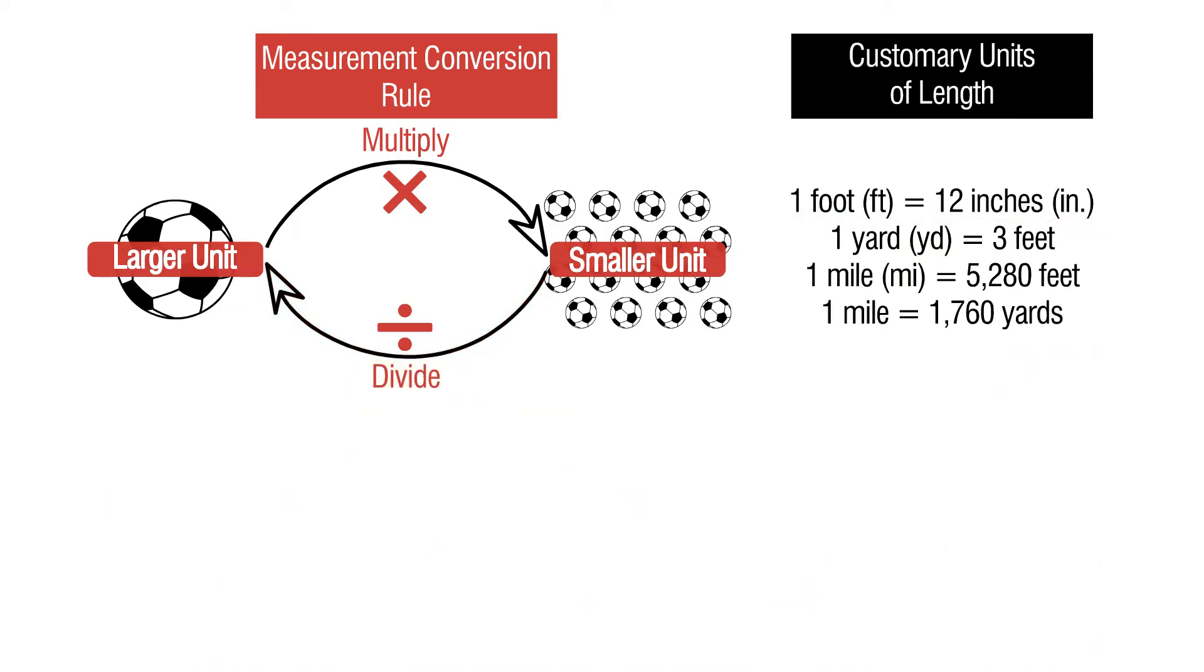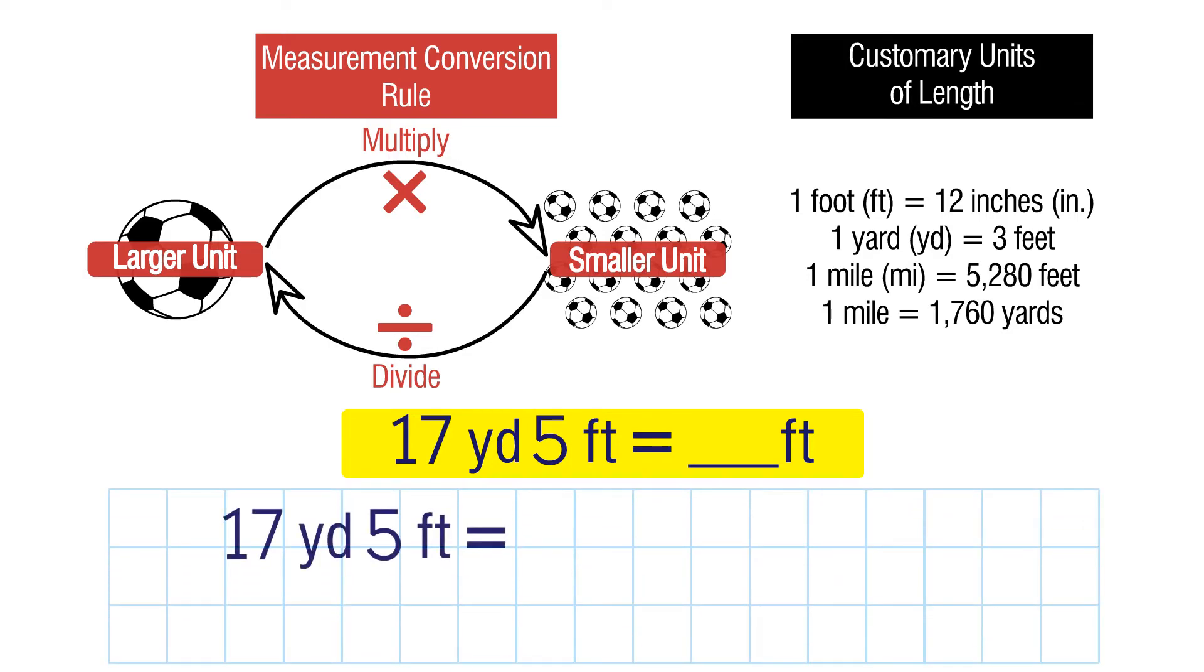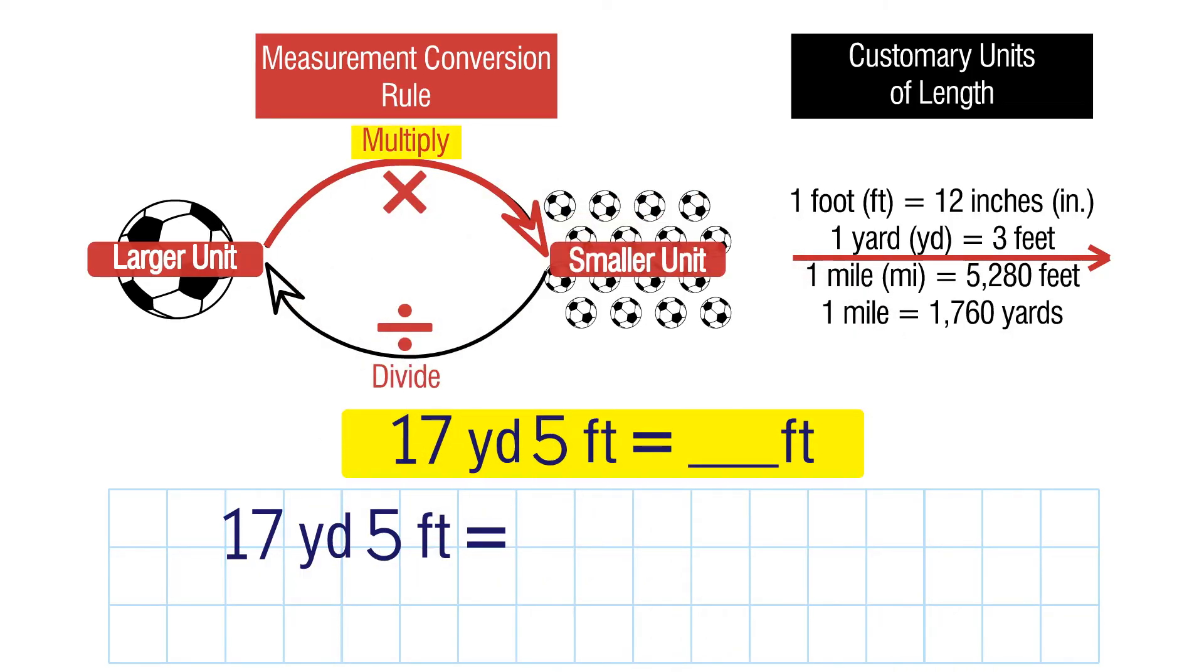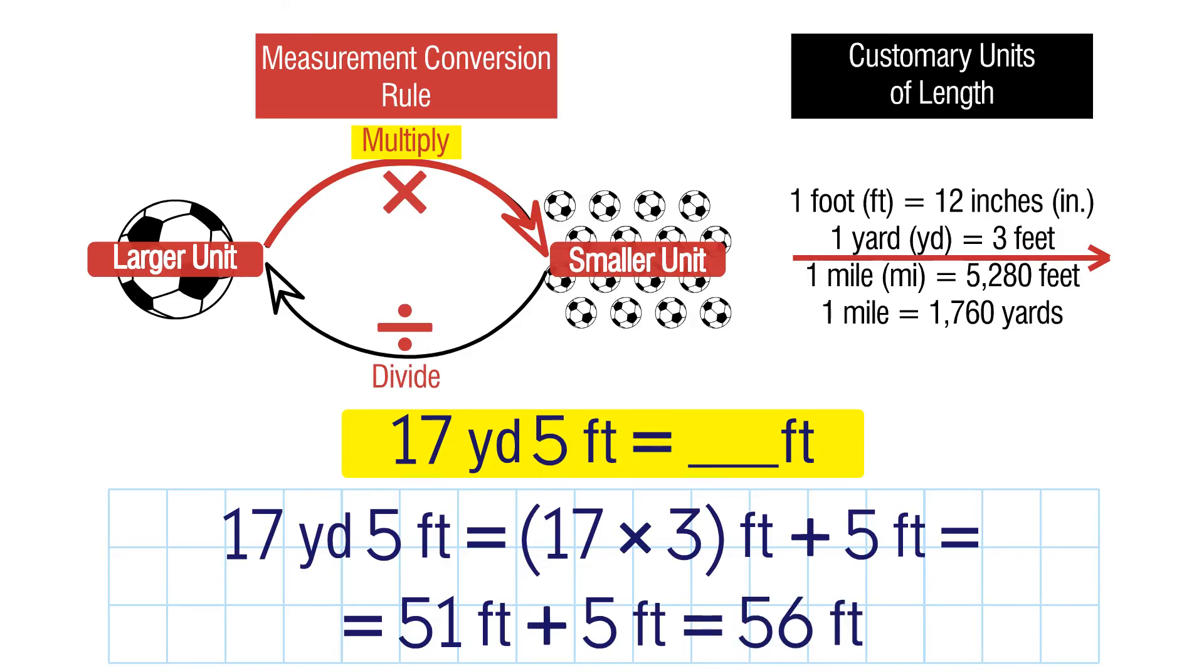Let's do another example. Convert 17 yards and 5 feet to feet. We're going from larger units to smaller units, so we need to multiply. 1 yard has 3 feet, so we multiply 17 by 3. Then we add the remaining 5 feet. So we have 51 feet plus 5 feet, which is 56 feet. So 17 yards and 5 feet equals 56 feet.